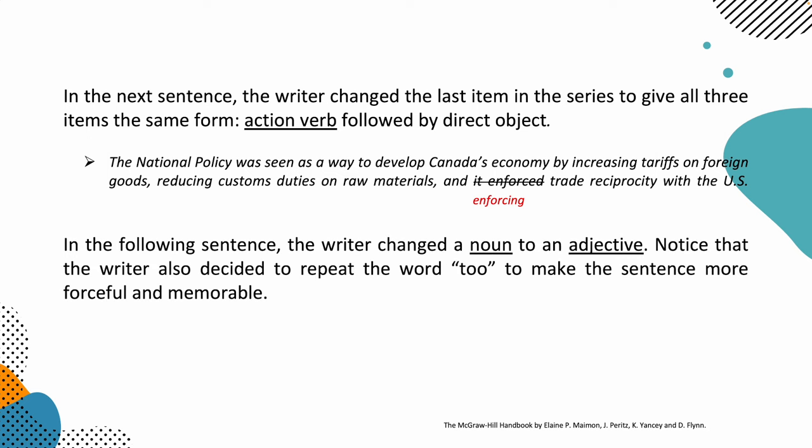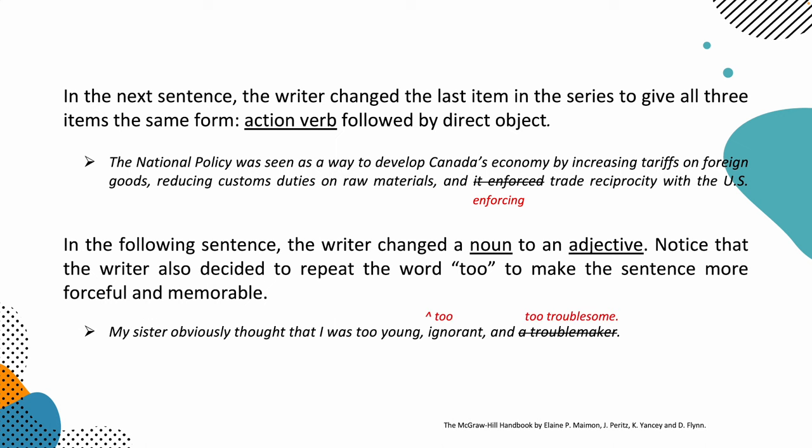In the following sentence, the writer changed a noun to an adjective. Notice that the writer also decided to repeat the word 'too' to make the sentence more forceful and memorable. My sister obviously thought that I was too young, too ignorant, and too troublesome — right? It sounds much better. Instead of having 'my sister obviously thought that I was too young, ignorant, and a troublemaker.' The adverb 'too' makes the sentence more consistent, so I added it before the adjectives 'ignorant' and 'troublesome.'